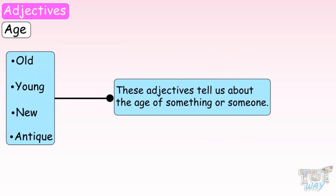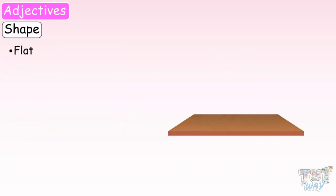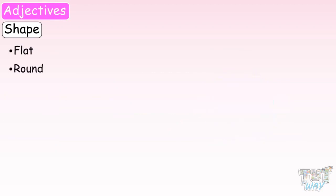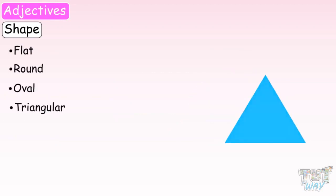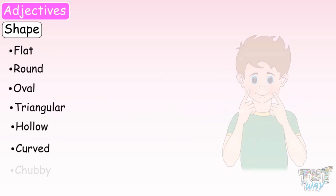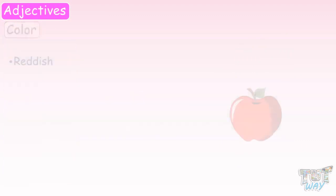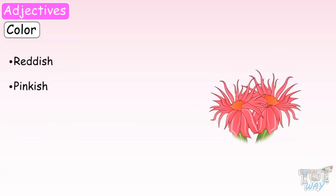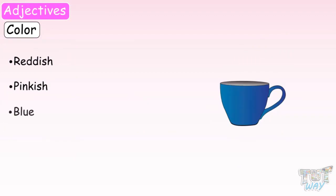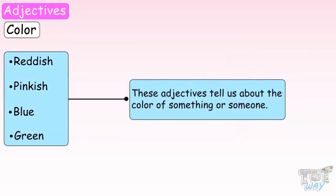Shape adjectives include: flat, round, oval, triangular, hollow, curved, chubby. These adjectives tell us about the shape of something or someone. Color adjectives include: reddish, pinkish, blue, green. These adjectives tell us about the color of something or someone.